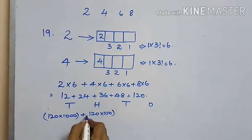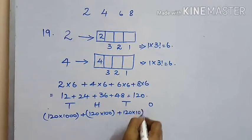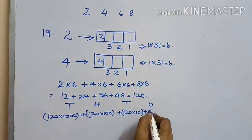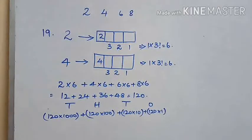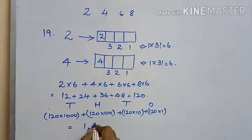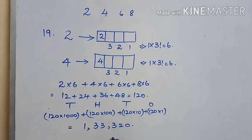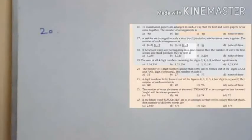Now considering the four positions — thousands, hundreds, tens, and ones — the total sum is 120 into 1000 plus 120 into 100 plus 120 into 10 plus 120 into 1. Altogether, the sum of all four-digit numbers containing the digits 2, 4, 6, 8 is 1 lakh 33 thousand 3 hundred and 20, which is option D.